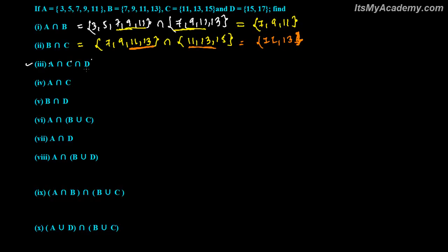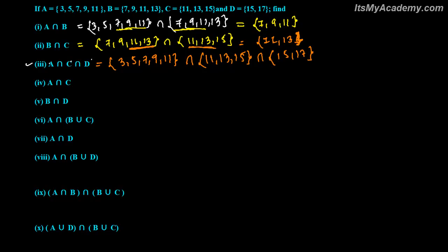Now A intersection C intersection D — what is the thing common between A, C, and D? A has 3, 5, 7, 9, 11. C has 11, 13, 15. D has 15 and 17. Eleven is in A and in C, but not in D. Nothing is common between all three sets — nothing is there. Empty. You can say Phi. So A intersection C intersection D is Phi.